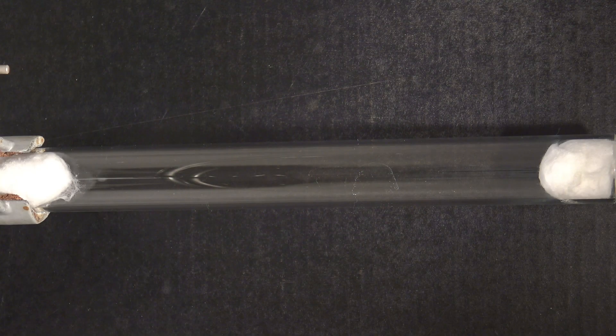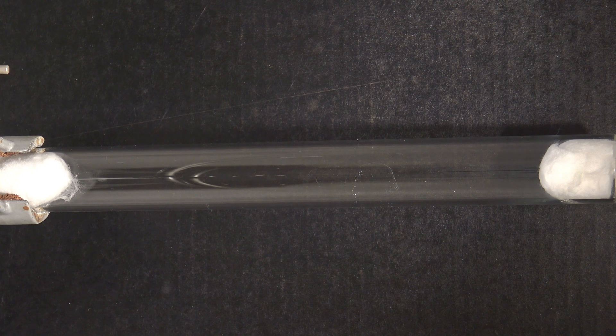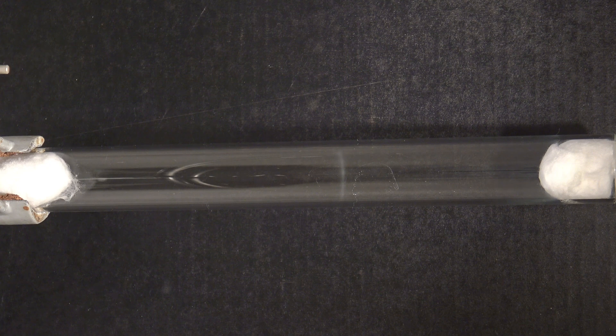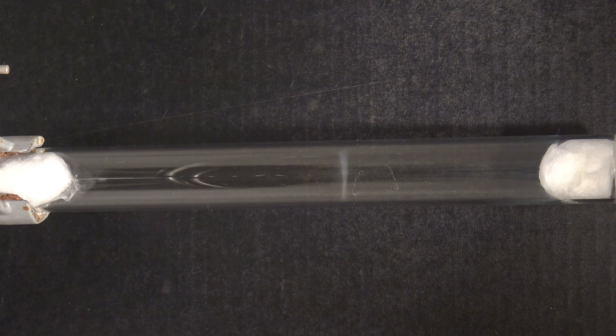This glass tube was closed with two pieces of cotton, of which one was soaked with ammonia and the other one with hydrochloric acid. When the released gases meet, they react to form ammonium chloride.